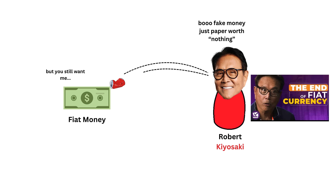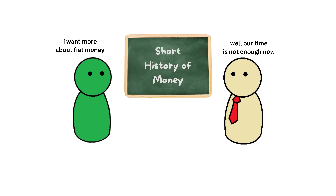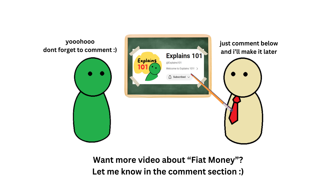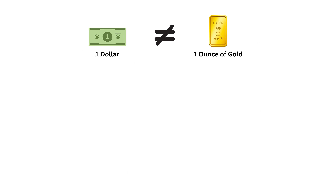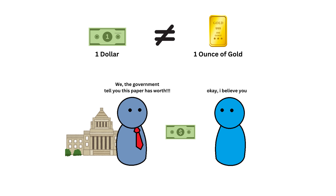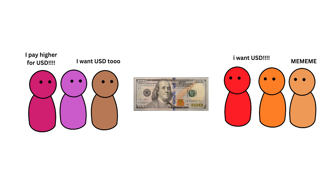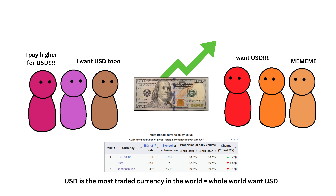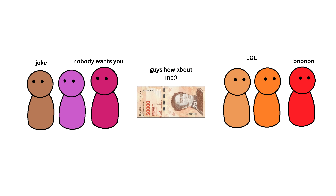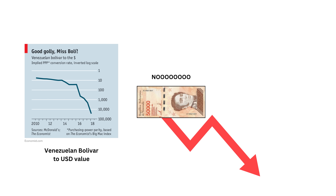That's why some people call it fake money. If you want to learn more about this, let me know in the comments section, and I can make another video for it. As fiat money has no physical value like gold, its value depends on whether people still want it or not. If many people want the money, they will compete to get it, making the value of the money go up. But if nobody wants the money, its value goes down.